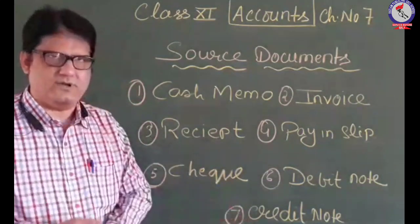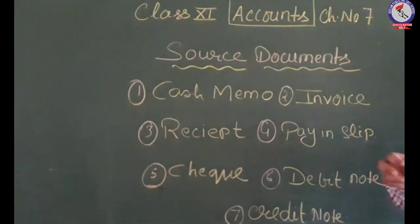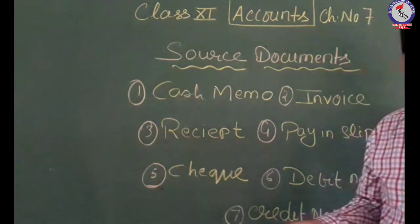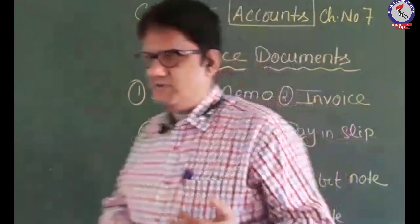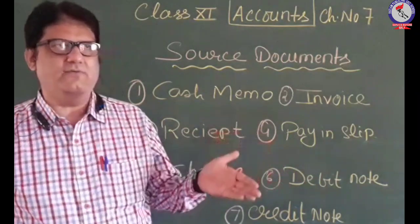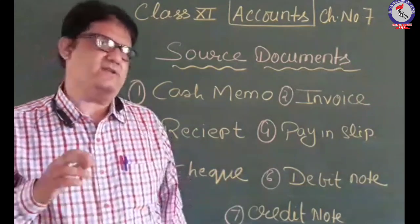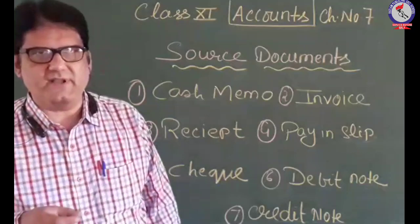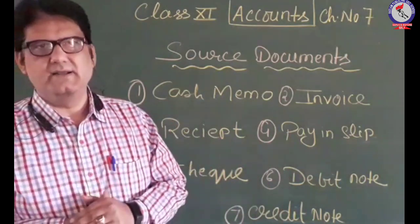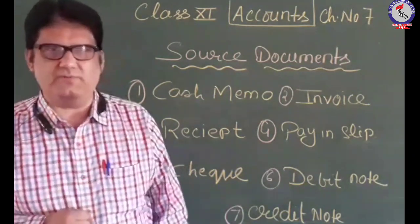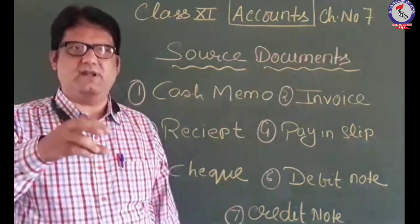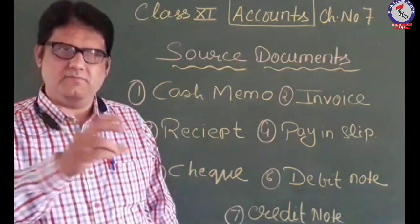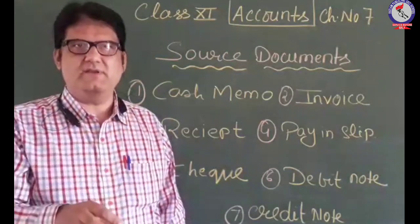Then comes credit note. A credit note evidences that the concerned person's account — on whose name the note is prepared — is credited with a certain amount of money. This is used when you have overcharged the invoice. You then prepare a credit note in the name of that party for the difference amount that was overcharged, which is evidence that you are supposed to pay that much money to the concerned party.